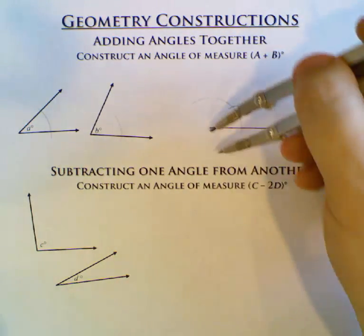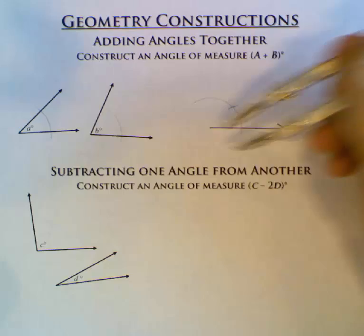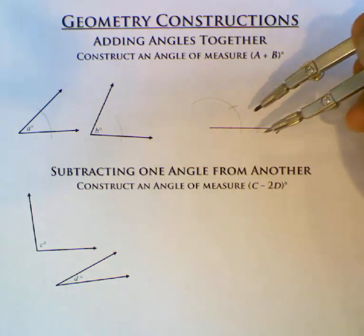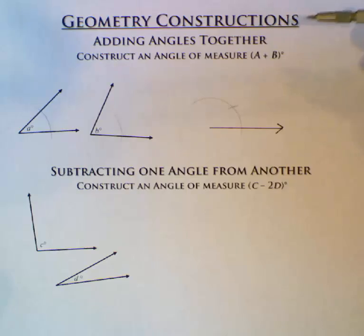With A marked off, if I had just continued this, if I just connected these dots, this would be A over here. I would have copied A. But I'm not trying to copy A. I'm trying to do A plus B.